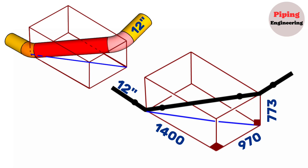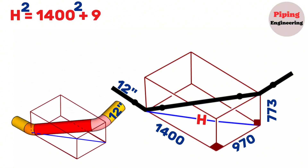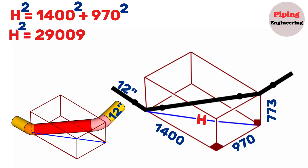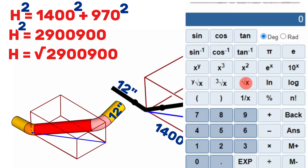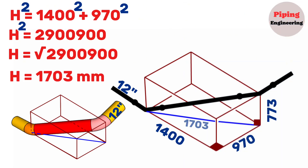First let's find the distance between the centers of the two elbows. After the pipeline rotates inside the parallelogram, two right-angle triangles are created. We will find the hypotenuse of the horizontal right triangle with perpendicular sides of 1400 and 970, shown with the blue line, using the Pythagorean theorem. H squared equals 1400 squared plus 970 squared, which gives H squared equals 2,900,900. Taking the square root, H equals approximately 1703 millimeters.